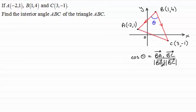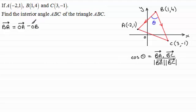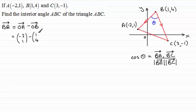On that basis, we need to work out the vectors BA and BC. Starting with the vector BA: using the standard result, it's the position vector of A minus the position vector of B, which gives us (-2, 1) minus (1, 4). Doing that subtraction in the usual way, we end up with the column vector (-3, -3).